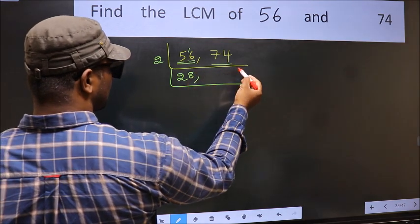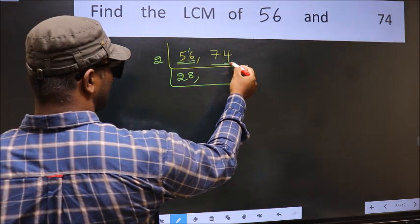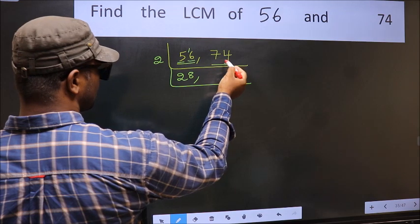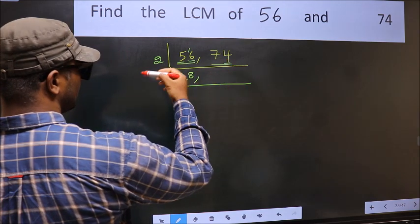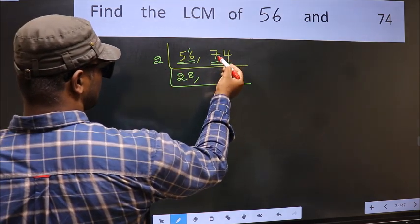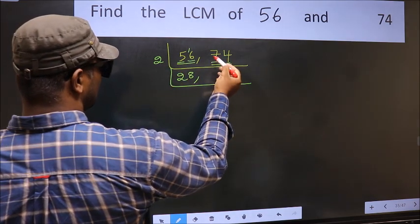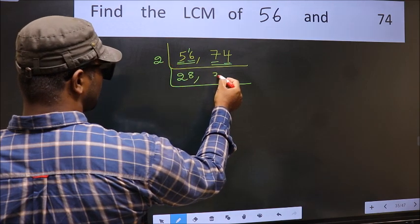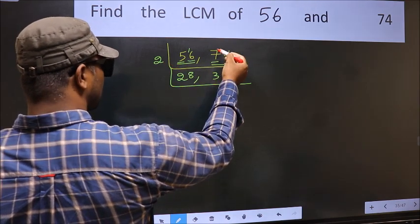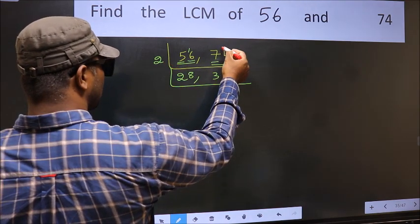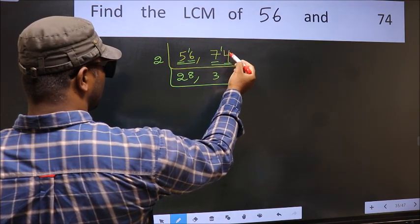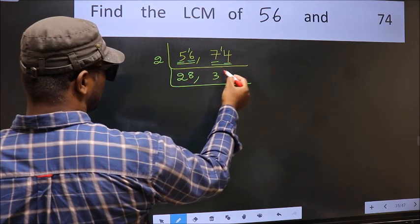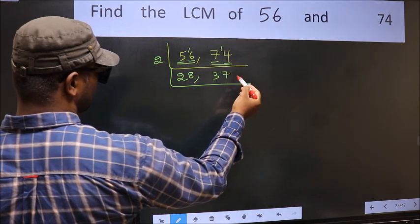The other number is 74. Last digit 4 — A1 — so this is divisible by 2. First digit is 7; a number close to 7 in the 2 table is 2×3=6. So 7 minus 6 is 1, carried forward: 14. When do we get 14 in the 2 table? 2×7=14.